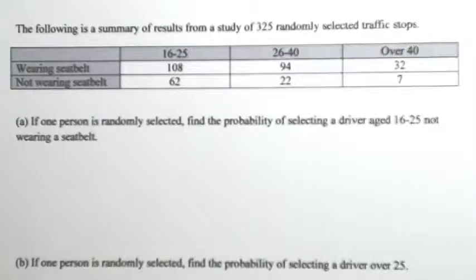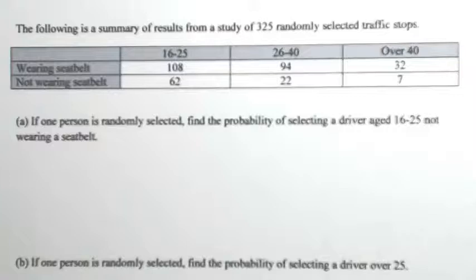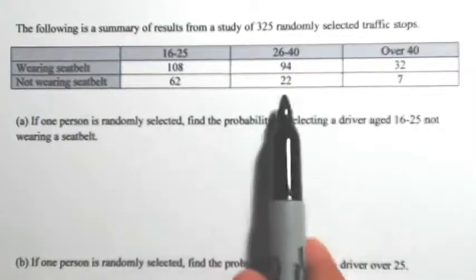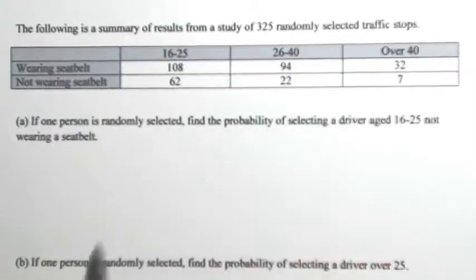The following is a summary of results from a study of 325 randomly selected traffic stops. From this table you can see the group of people that were wearing a seatbelt and the ones that were not wearing a seatbelt, broken down into the different age groups.